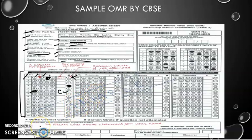The last new thing visible on the screen is one sentence we have to write in our own handwriting: 'I confirm that all particulars given above are correct,' and then the student's signature. In running hand you will write it and sign it there.